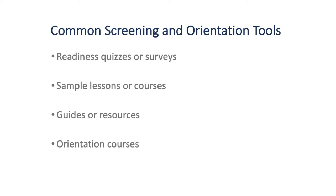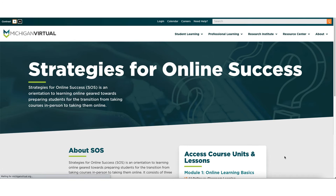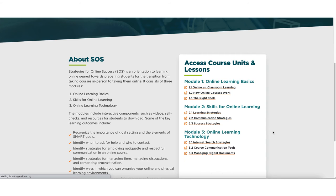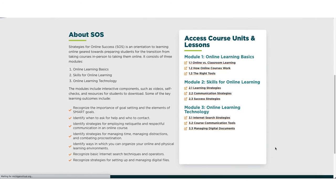Finally, some online schools or programs have orientation courses that students would complete either in conjunction with their first course or prior to taking their first course. An example of an online orientation course is provided by this particular U.S. based online school. As you can see, the course is entitled Strategies for Online Success. When we scroll down and look at the topics included in the three modules, you can see that while there are some soft skills included in this particular orientation, especially in module two, the vast majority of the items listed are still technology-based skills that the student would be expected to have.